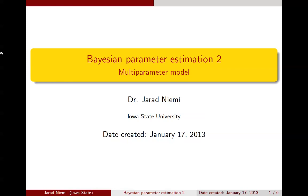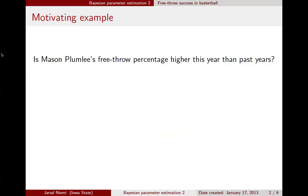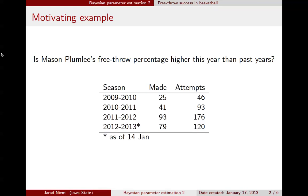Hello, my name is Jared Niemi. In this mini-lecture, we are going to be continuing our conversation about Bayesian parameter estimation to the multi-parameter setup. We are going to continue also our discussion about Mason Plumlee's free throw percentage, but the scientific question this time will be whether his free throw percentage this year is higher than it has been in past years.